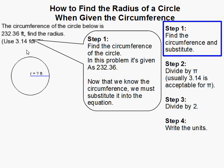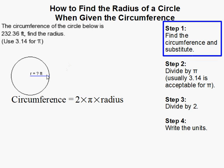After we find that we need to substitute it into the radius equation, which is circumference equals 2 times pi times the radius. So we substitute like that.